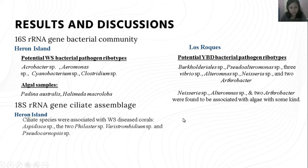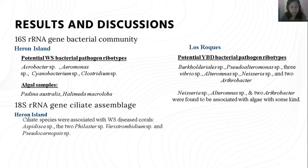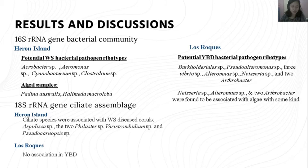For the 18S rRNA gene ciliate assemblage, ciliate species associated with WS disease corals included species of Aspidisca, two from the genus Phylaster, species of Euplotes, and Pseudocohnilembus. Five of these ciliates were associated with WS disease corals. In Los Roques, there was no association shown between ciliate assemblages and YBD, meaning ciliates detected in algal samples had no association with YBD.